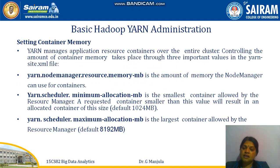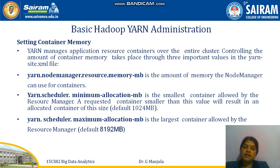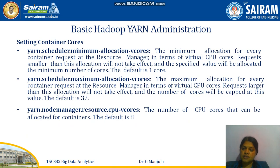Setting container memory involves the YARN node manager resource memory, the YARN scheduler minimum allocation, and the scheduler maximum — approximately 800 MB and 8192 MB respectively. These are the memory container settings and allocations used in administration. Similarly, container CPU cores involve scheduler minimum, maximum, and resource settings.